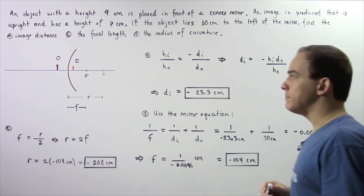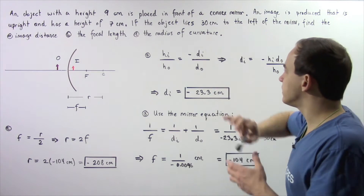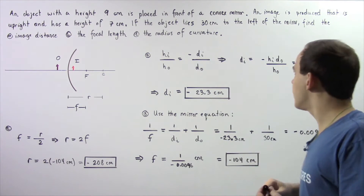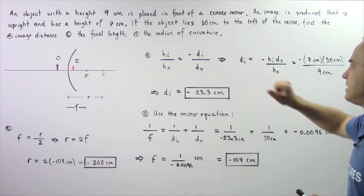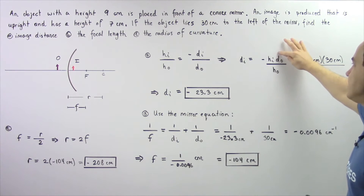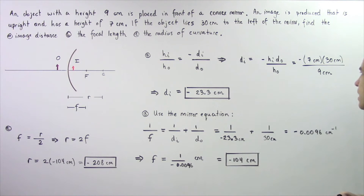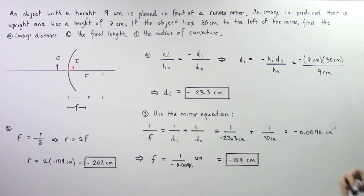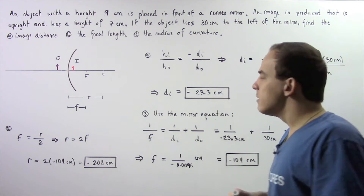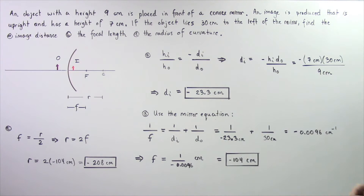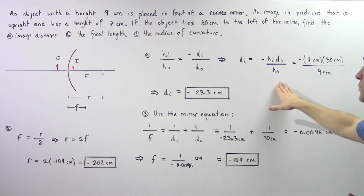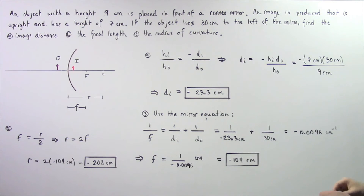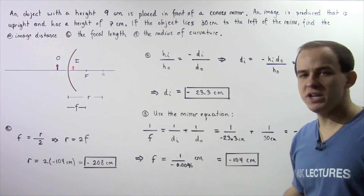In Part A we're looking for the image distance DI, so we rearrange to get: DI equals negative of the product of HI and DO, divided by HO. The image height HI is 7 centimeters, the object distance DO is 30 centimeters, and the object height HO is 9 centimeters. So 30 divided by 9, multiplied by 7, gives us approximately negative 23.3 centimeters.